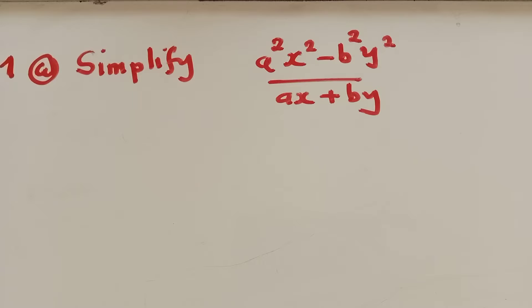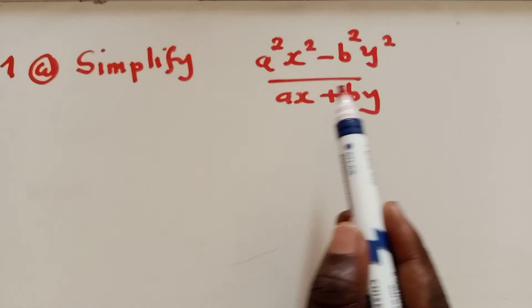Question 1a was the question you are able to see, which says simplify a squared x squared minus b squared y squared over ax plus by. We need to know that it is the difference of two squares because of the powers. So how do you work out the difference of two squares?